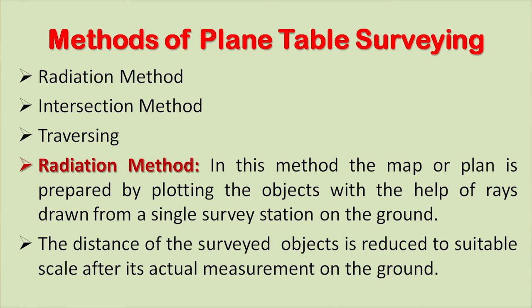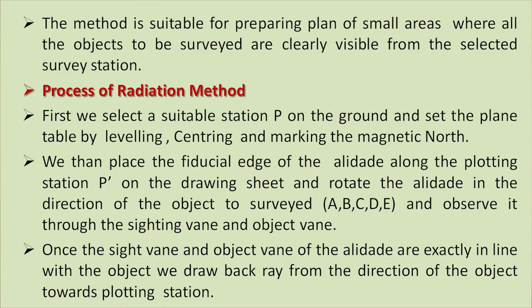There are broadly three methods of plane table surveying: radiation method, intersection method, and traversing. The radiation method is the simplest. In this method, the map or plan is prepared by plotting objects with the help of rays drawn from a single survey station on the ground. The distance of the surveyed objects is reduced to a suitable scale after its actual measurement on the ground. The method is suitable for preparing a plan of small areas where all the objects to be surveyed are clearly visible from the selected survey station.